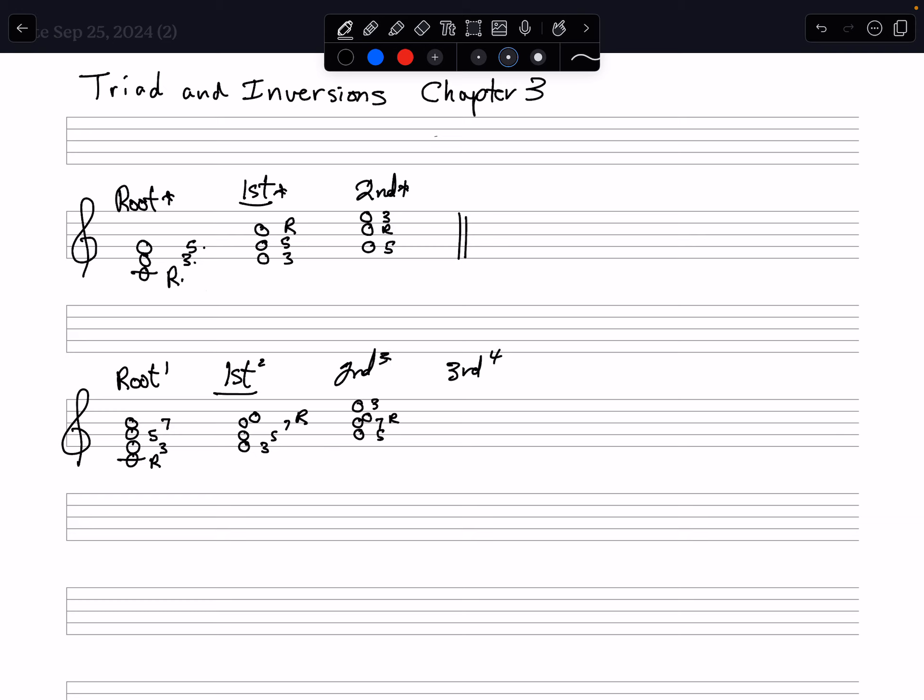And third inversion. So now the seventh is going to be on top, and it looks like that. It's going to be seventh, root, third, and fifth. This gives you all the different inversions of triads and seventh chords. I hope that helps a little bit.